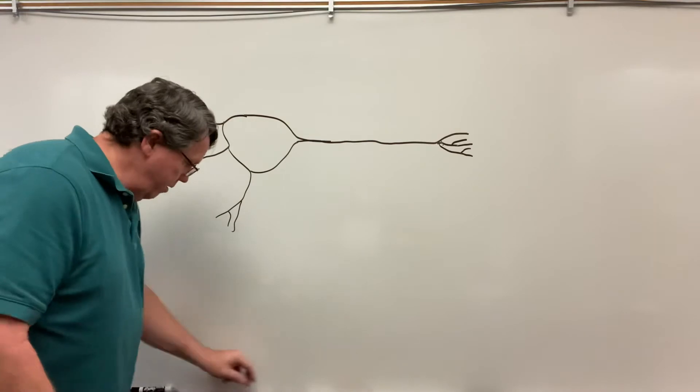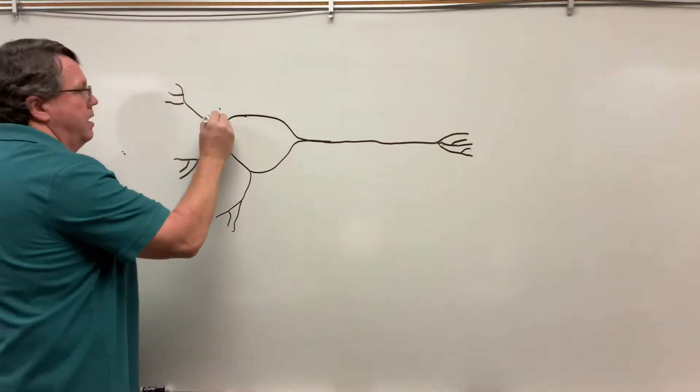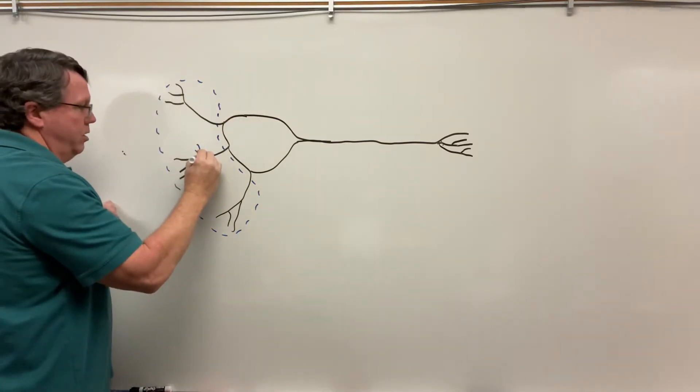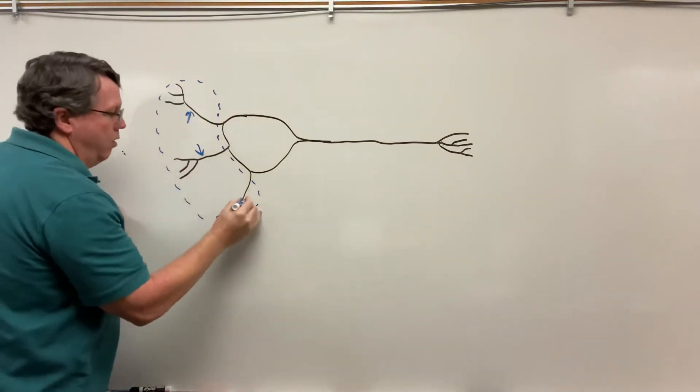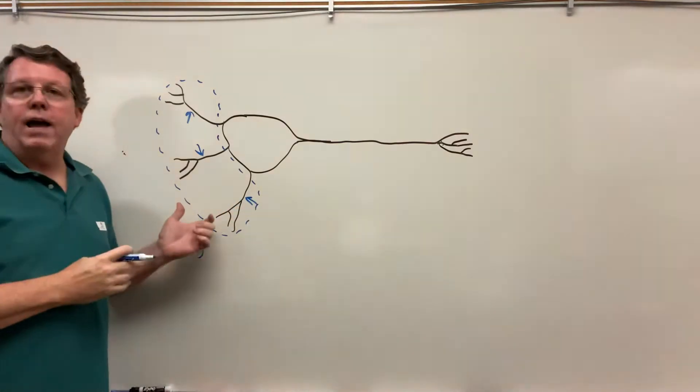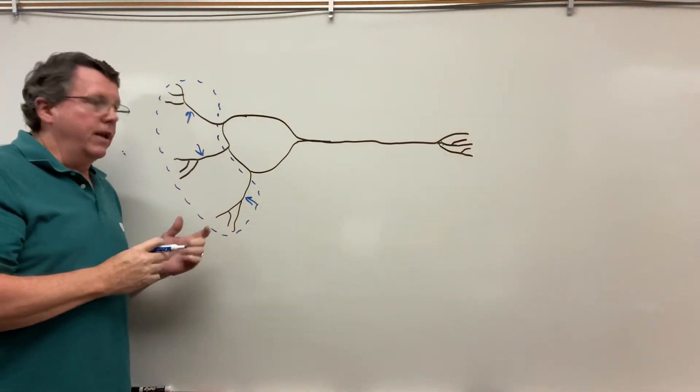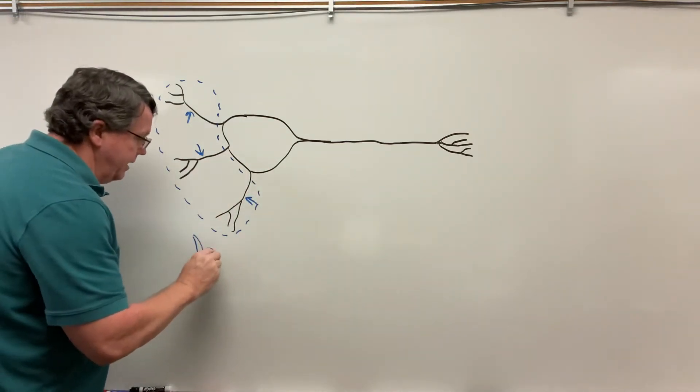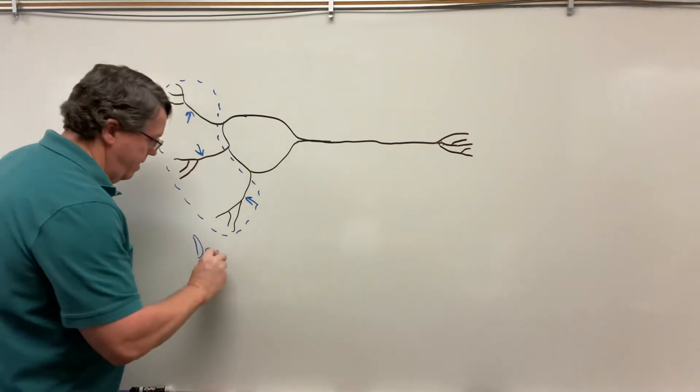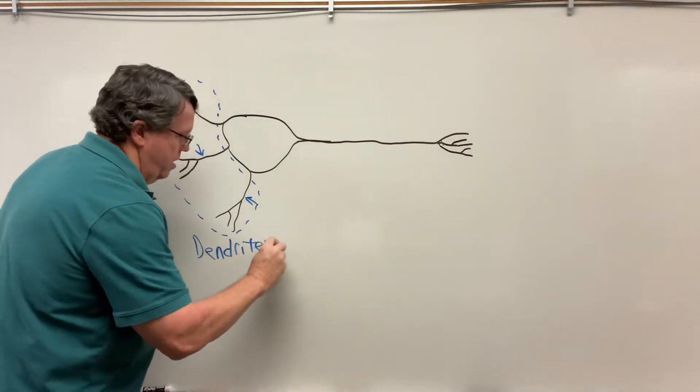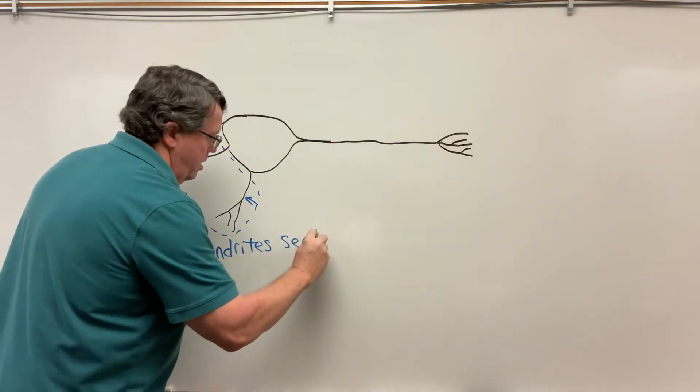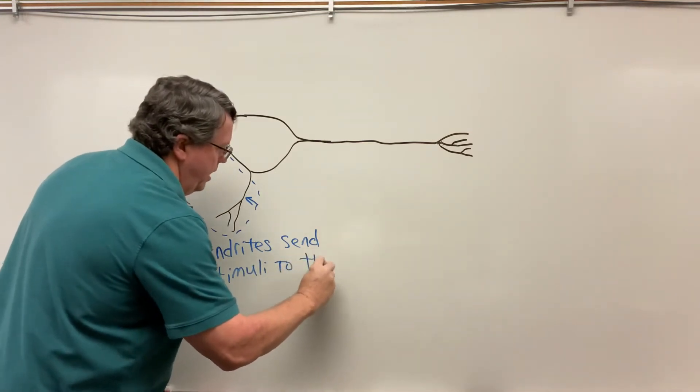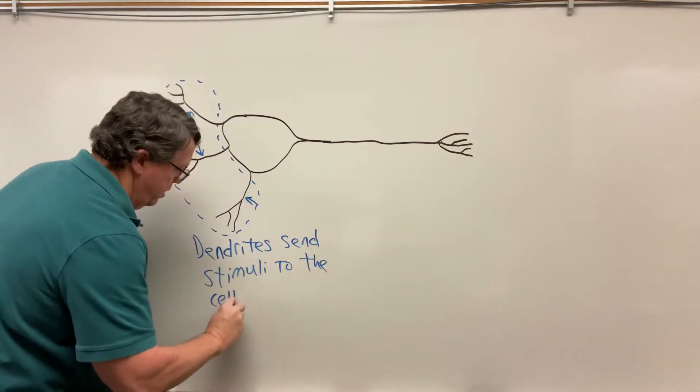So let's start right here. These are our dendrites. When you see all these sticking out, those are dendrites. Dendrites are going to have receptors on the end. They're going to take stimuli, a signal, and they're going to send it to the cell body.